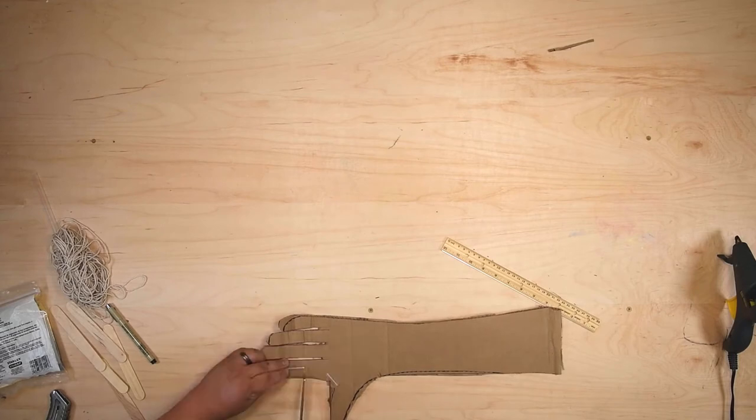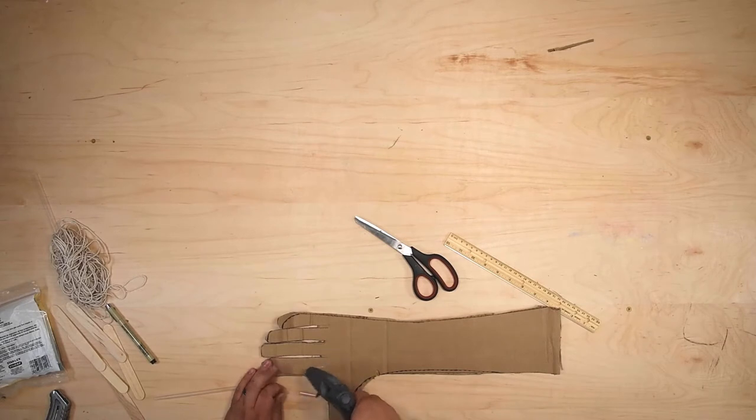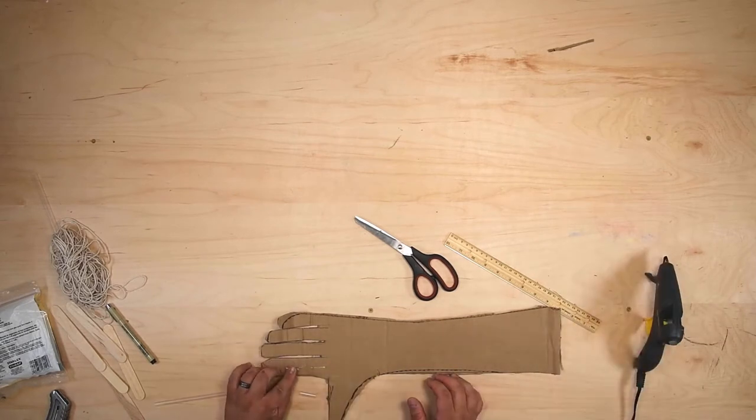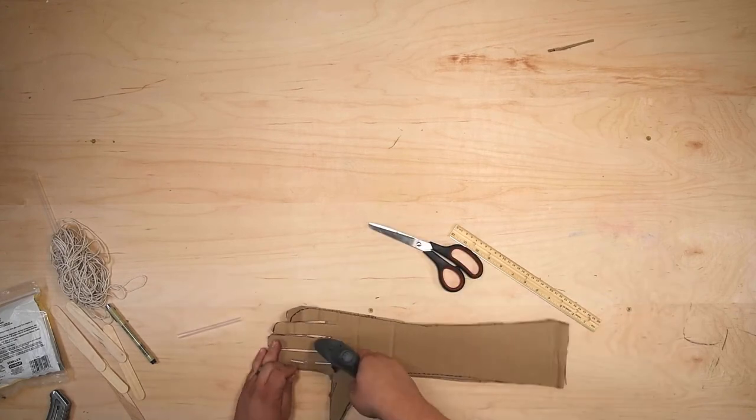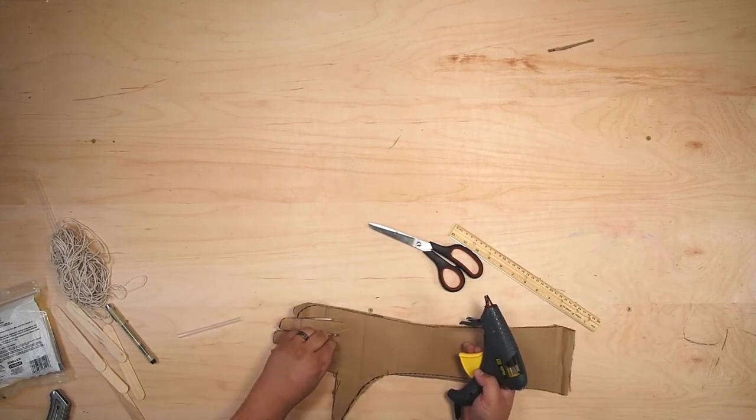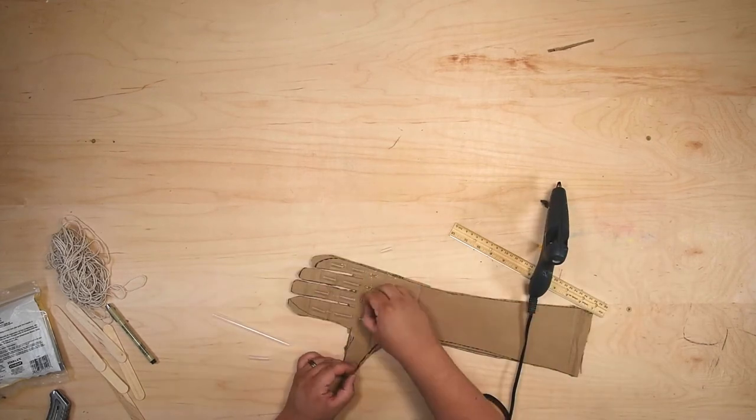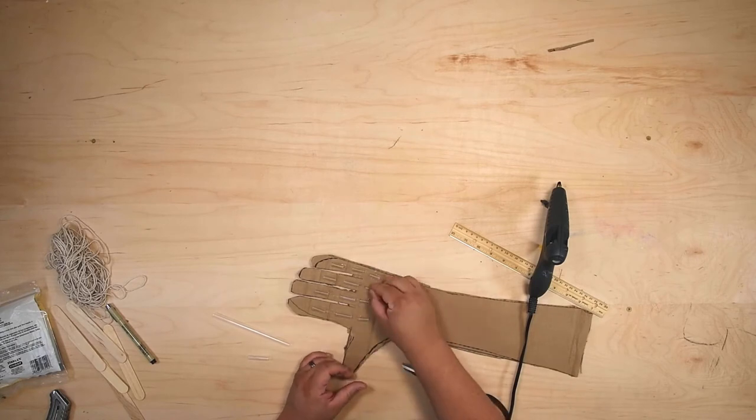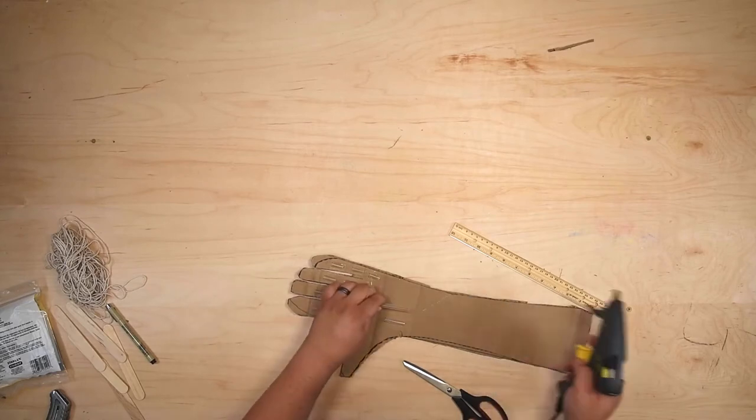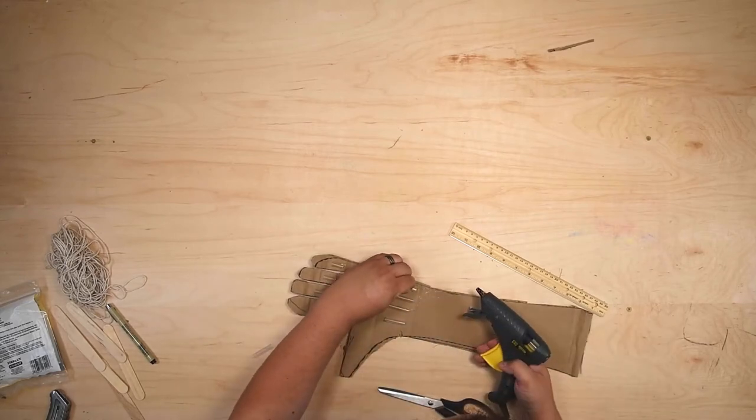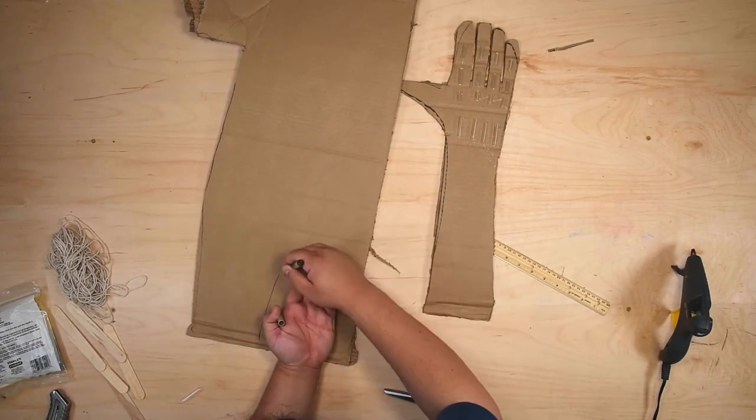Now, you also want to take your straws and sort of measure them out to match the length of the flat parts between the two bottom joints and hot glue those on there. Go ahead and do that for every single finger, and you want to leave the very end of the finger without a straw right now. And go ahead and add a few extra pieces of straw to help guide the string that will run through it here in a few minutes.